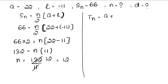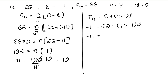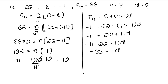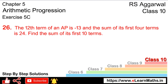Ab hume common difference nikalna hai. nth term kaise nikaalte the: a + (n-1)d. Ab n pata chal gaya 12, a pata hai 22, nth term minus 11 hai. Toh minus 11 equals 22 plus (12-1)d, yaani 11d. Left side aaya: minus 11 minus 22 equals 11d, toh minus 33 equals 11d, aur d aa gaya minus 33 upon 11 — that is minus 3. D ki value aayi minus 3.